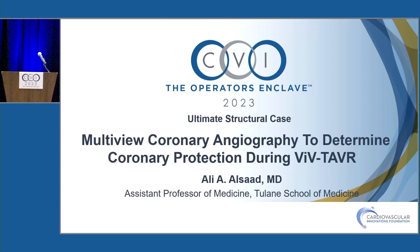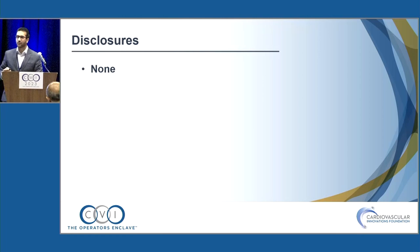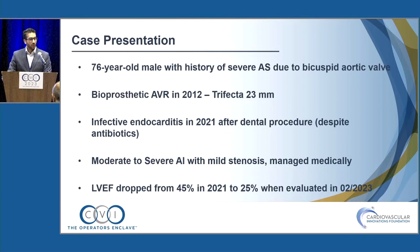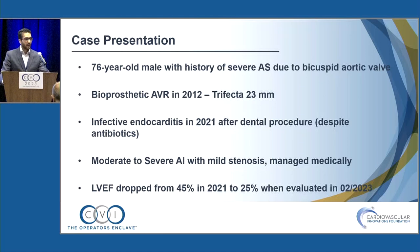Dr. Ali Alsad will talk about multi-view coronary angiography to determine coronary protection during valve-in-valve TAVR. We have a 76-year-old male with severe AS due to bicuspid aortic valve, who had a bioprosthetic surgical aortic valve implantation in 2012 — a Trifecta 23 — and then developed infective endocarditis in 2021 after a dental procedure, resulting in moderate-to-severe AI with mild stenosis.